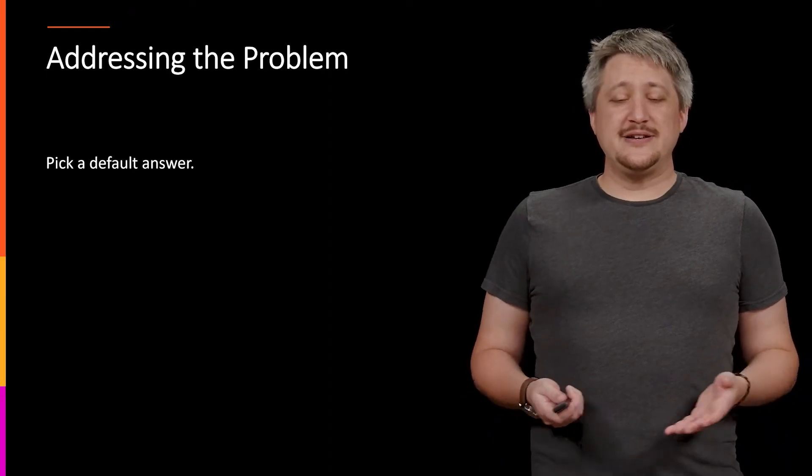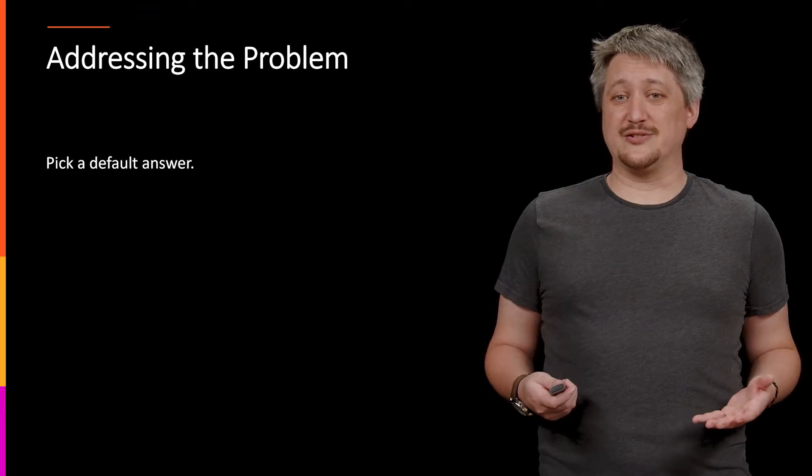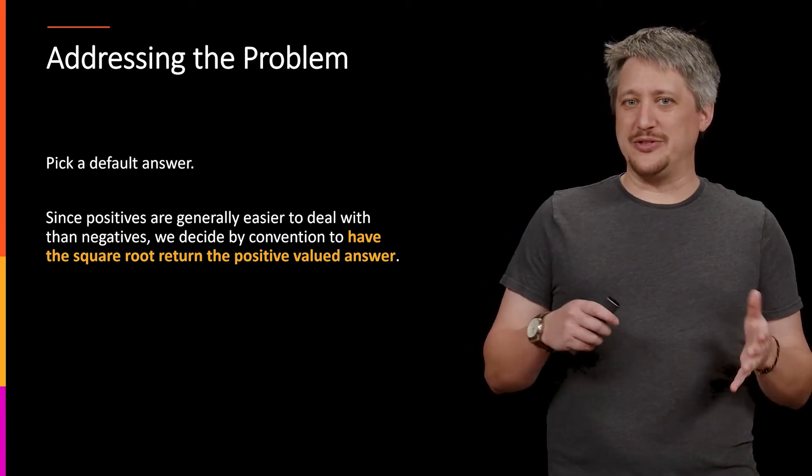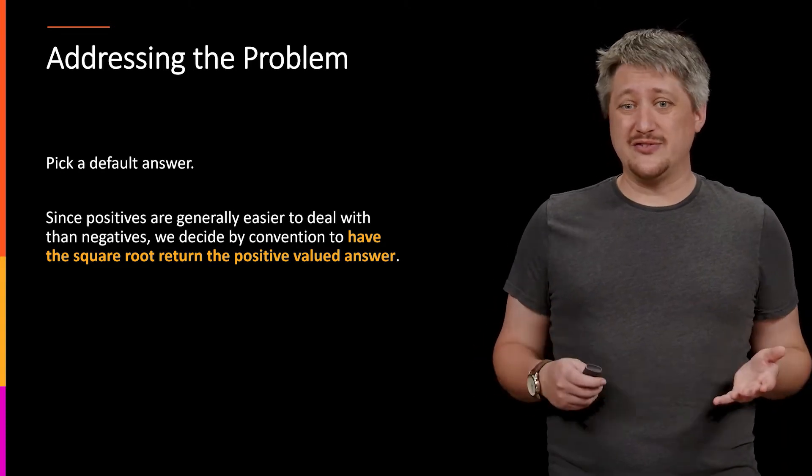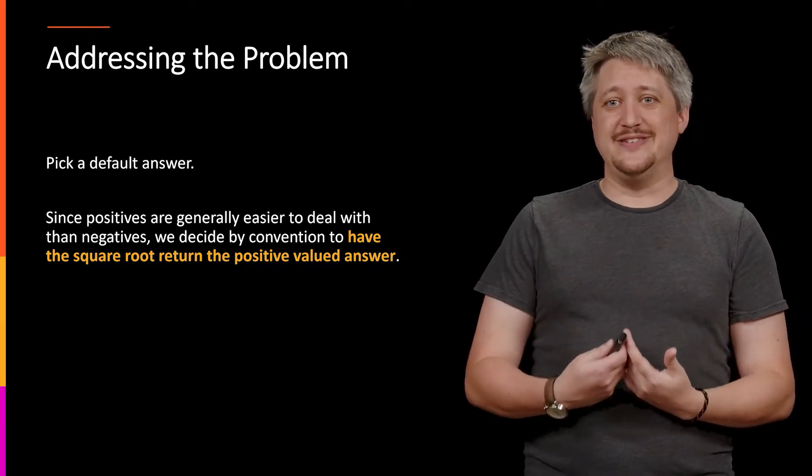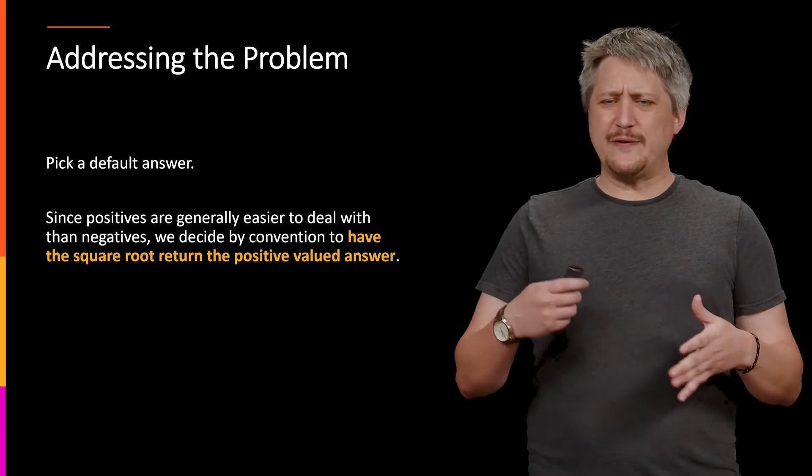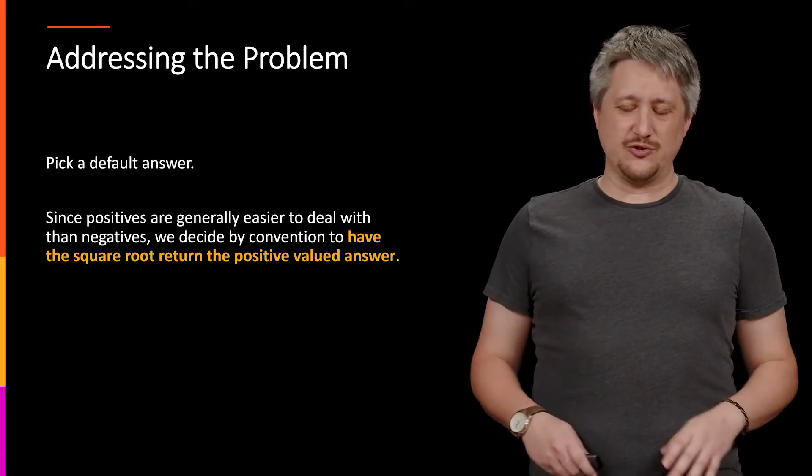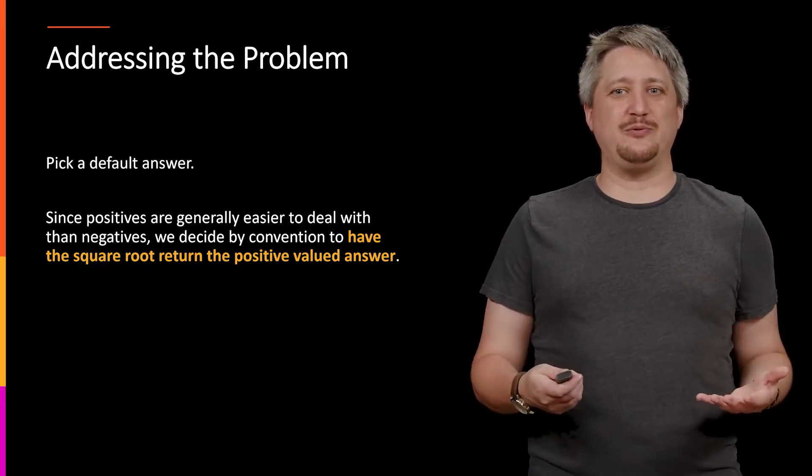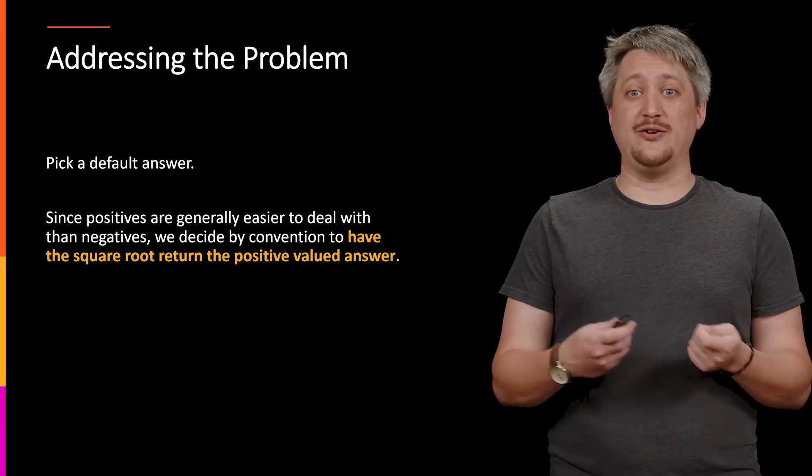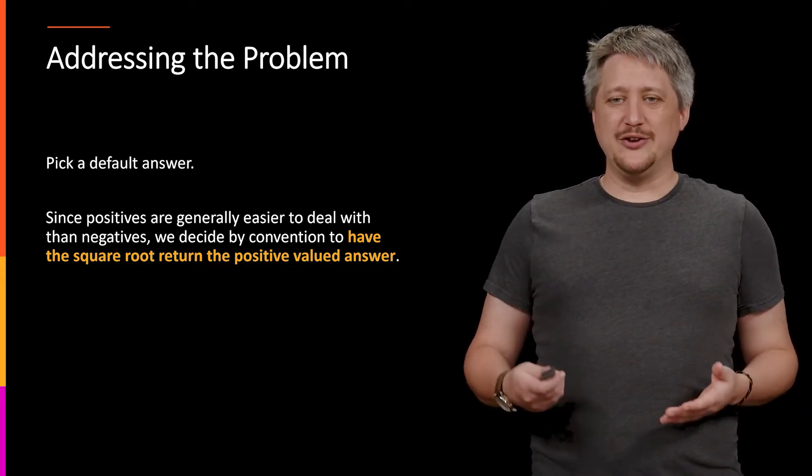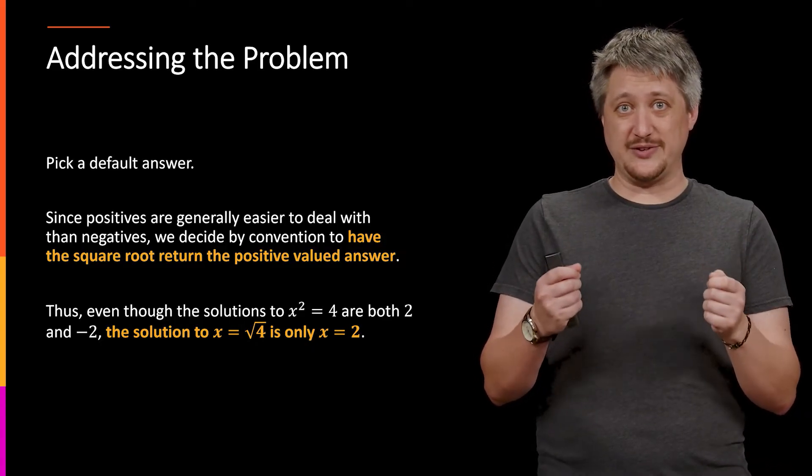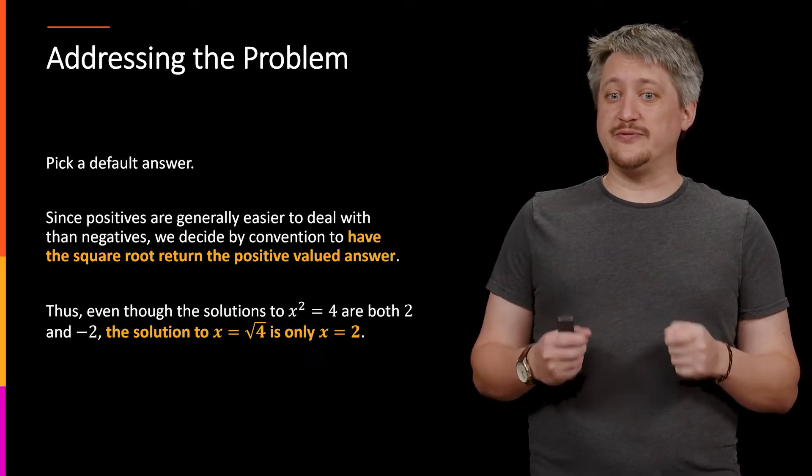The way we address that is that we pick a default answer. The thing is that if we want to have one or the other, in terms of the two or negative two, it turns out positive stuff is usually easier to deal with. So by convention, we decide that we're always going to have the positive stuff as the output. There's something called a primary branch of the square root function, but just know that this is a choice that we make. But this is an important thing to note that we're making this choice, because if we're looking at the original x² = 4, we have both two and negative two as answers. But the solution to x equaling square root of four, that's only two.